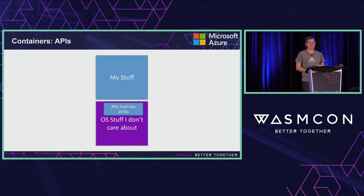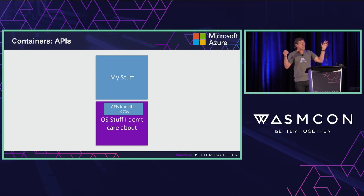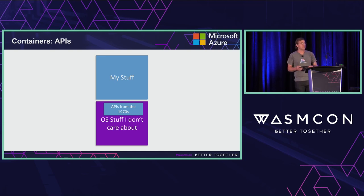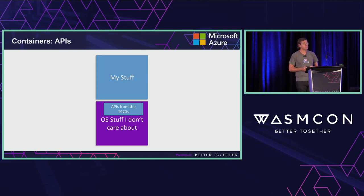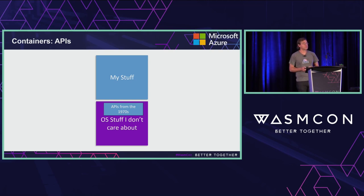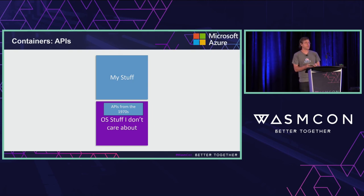The other thing I wanted to talk about is that in addition to the large piece of the container image that is stuff I don't care about, if we look down into the OS stuff I don't care about, what we see is a bunch of APIs that were literally designed in the 1970s. So we're in 2023 now — that's 50 years ago that those APIs were designed — and they were not designed for the world in which we live in. They were not designed for a cloud world, not for a distributed systems world. They were designed for single processors and single machines.